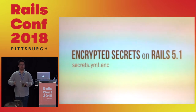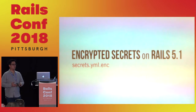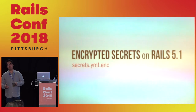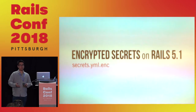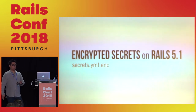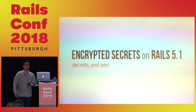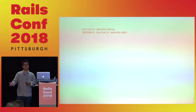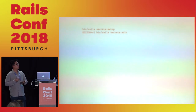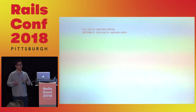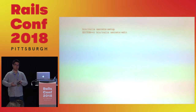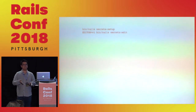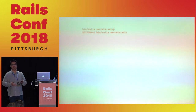On Rails 5.1 — it is deprecated, but we'll talk about it. This is the first time that Rails is helping you encrypt your data. Before you could use some gems, but now you could use it out of the box. When you want to use encrypted secrets, you run secrets setup, which creates a key on your application and also creates the secrets.yaml.enc file.